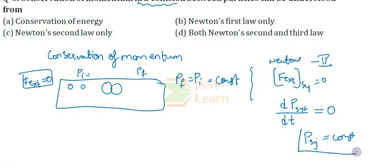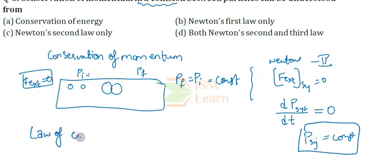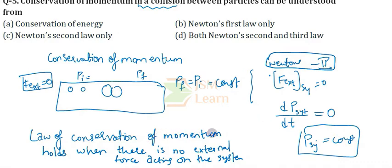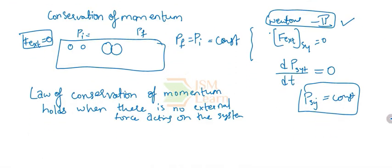This means the momentum of the system is constant — it is not changing with respect to time. So we concluded that the law of conservation of momentum holds when the external force acting on the system is zero. This conclusion was drawn with the help of Newton's second law, which explains the conservation of momentum.